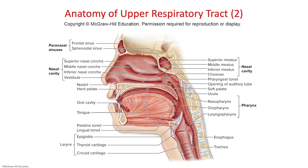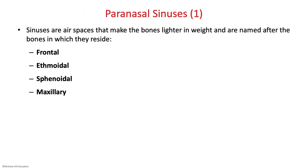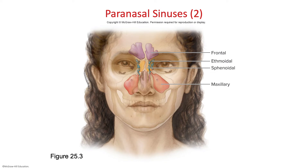Above the nasal cavity, you can see the paranasal sinuses — your frontal sinus within the frontal bone, and the sphenoidal sinus in the sphenoid bone. Those are spaces within their skull bones that make the bones lighter in weight, and they're named after the bones in which they reside. You'll be responsible for just the frontal and the sphenoidal sinus.